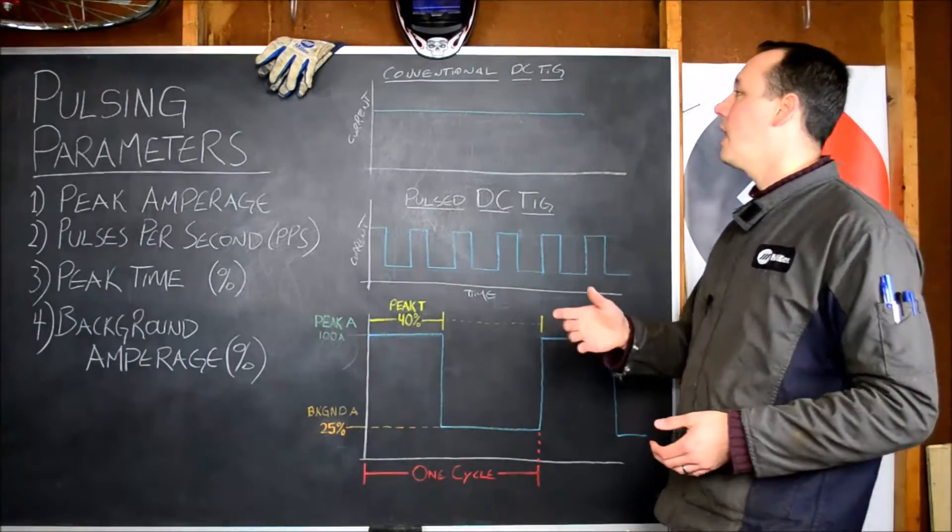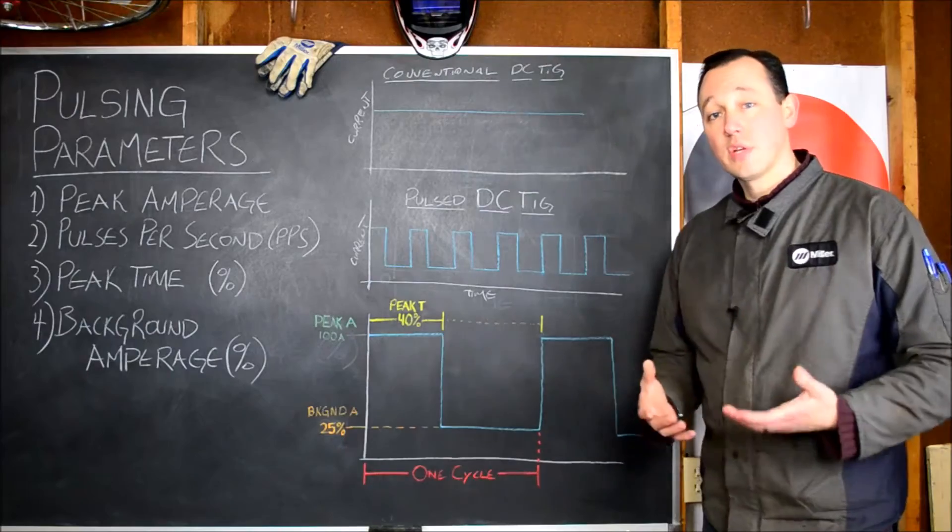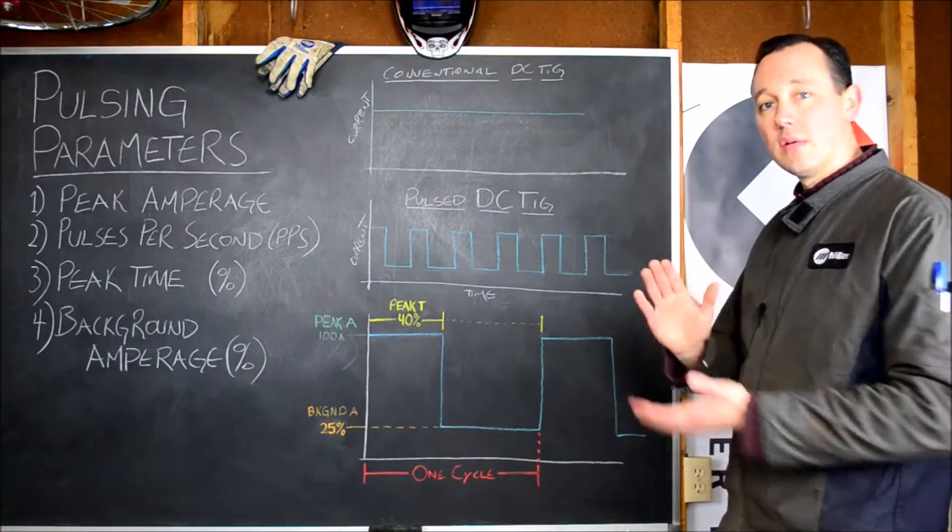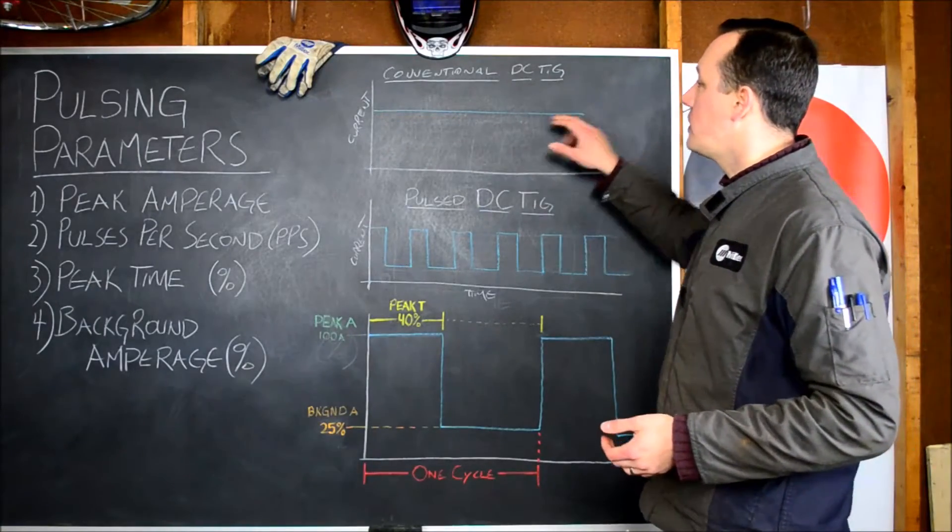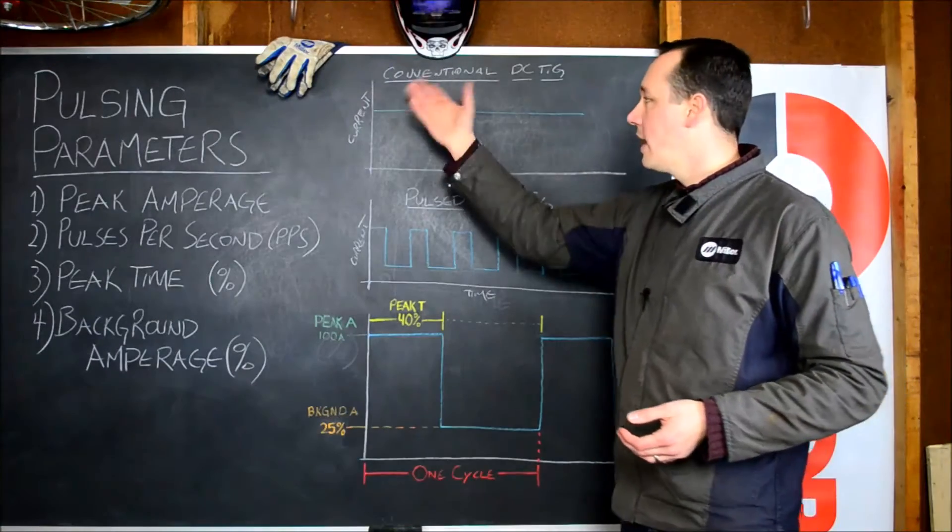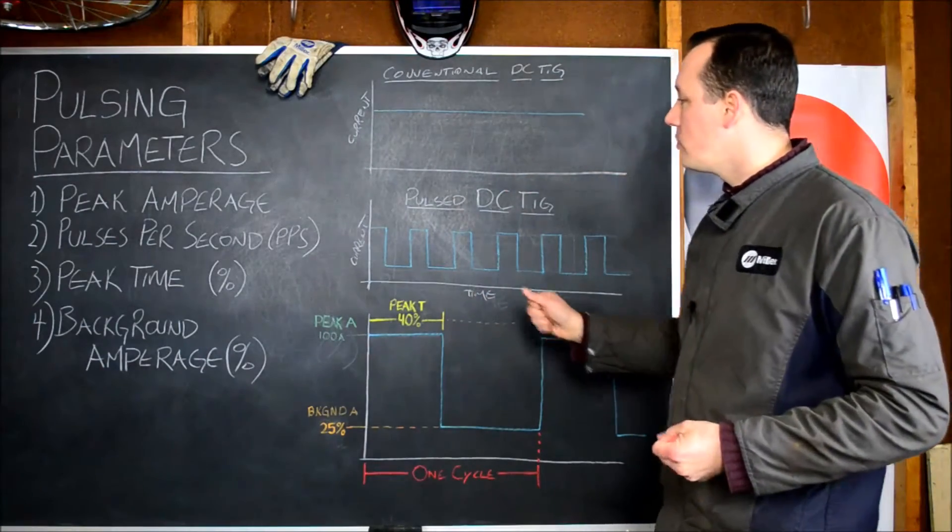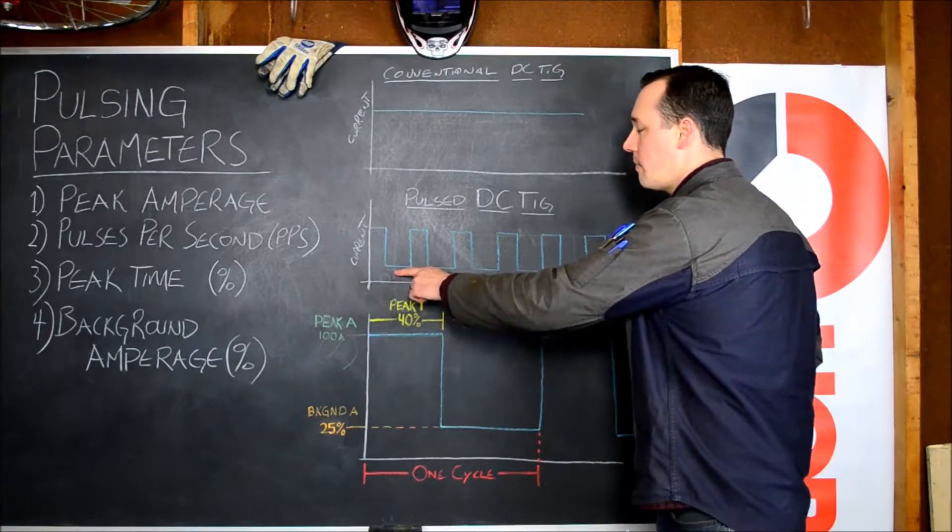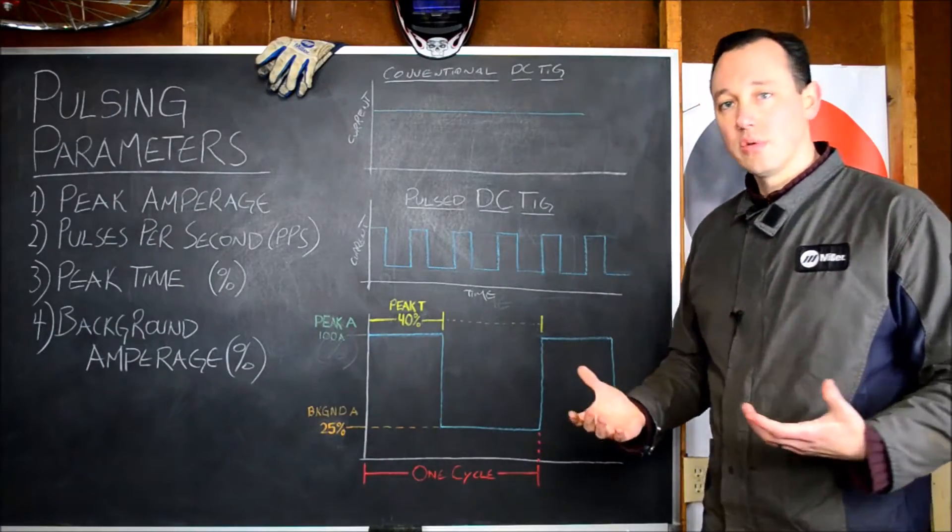So basically what we're looking at when we say pulsing is if you were to be welding with conventional DC TIG, you just turn it on, you set your amperage, you go to your pedal, and you hammer that pedal all the way down. This is what your current graph would look like. Just a straight line, 100 amps, whatever it is, all the way across. Now when we pulse, what we do is we vary, we oscillate between a very high peak and a low background amperage. And we do this over and over again at varying frequencies.